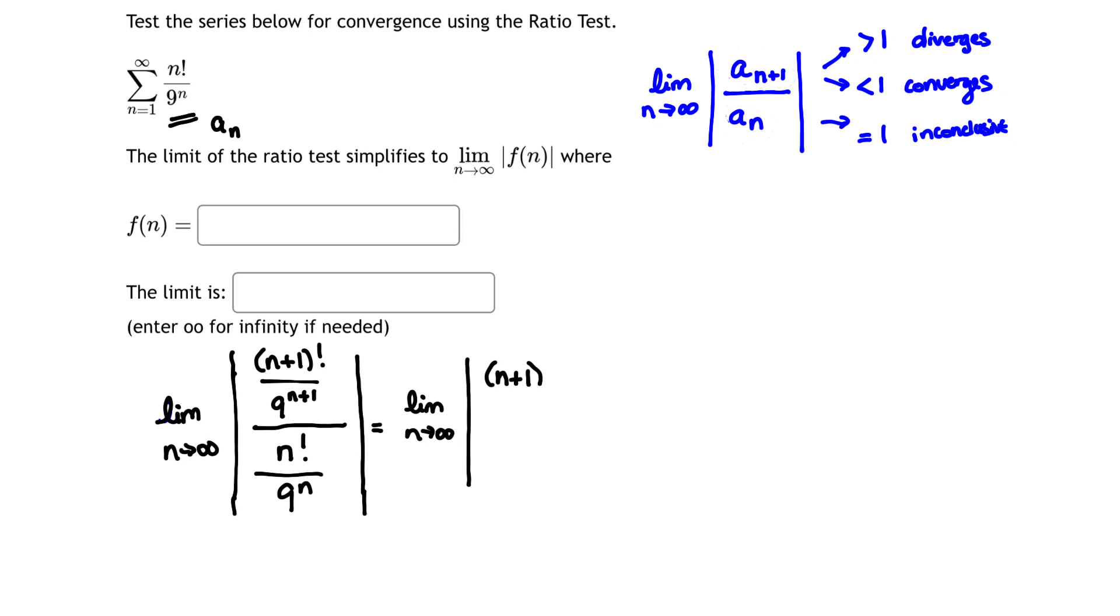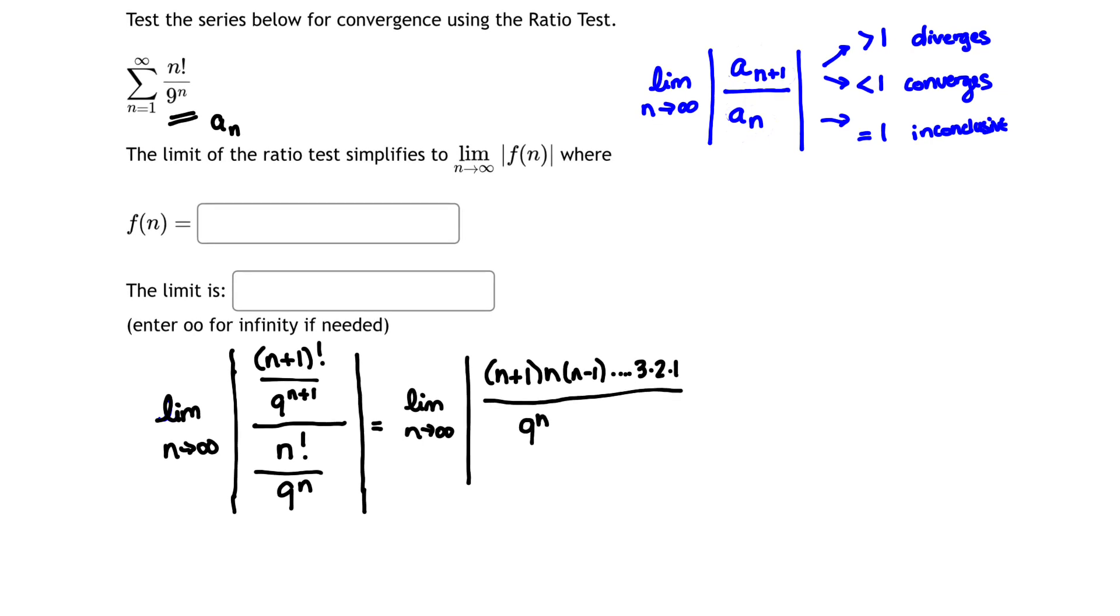n plus 1 factorial is n plus 1 times n times n minus 1 dot dot dot, all the way down to 3 times 2 times 1, correct? That's n factorial. And 9 to the n plus 1 is 9 to the n times 9 to the 1, using our exponent rules but expanding.